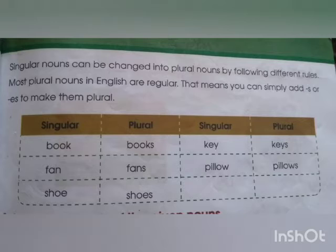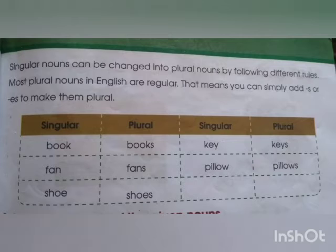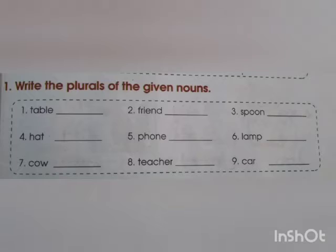Singular nouns can be changed into plural nouns by following different rules. Most plural nouns in English are regular — that means you can simply add 's' or 'es' to make them plural. Like: book → books, fan → fans, shoe → shoes, key → keys, pillow → pillows.